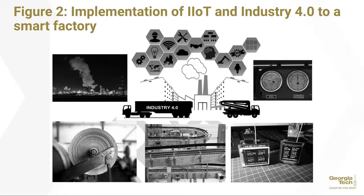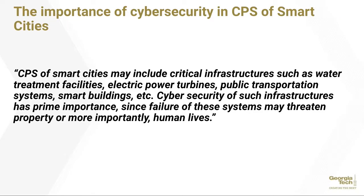Given the importance of that, when an intrusion happens for a cyber-physical system in a smart city context, it needs to be detected quickly to prevent further serious damage or loss. In the authors' words, the cyber-physical systems of smart cities may include critical infrastructures such as water treatment facilities, electric power turbines, public transportation systems, smart buildings, etc. Cyber security of such infrastructures has prime importance, since failure of these systems may threaten property or, more importantly, human lives.